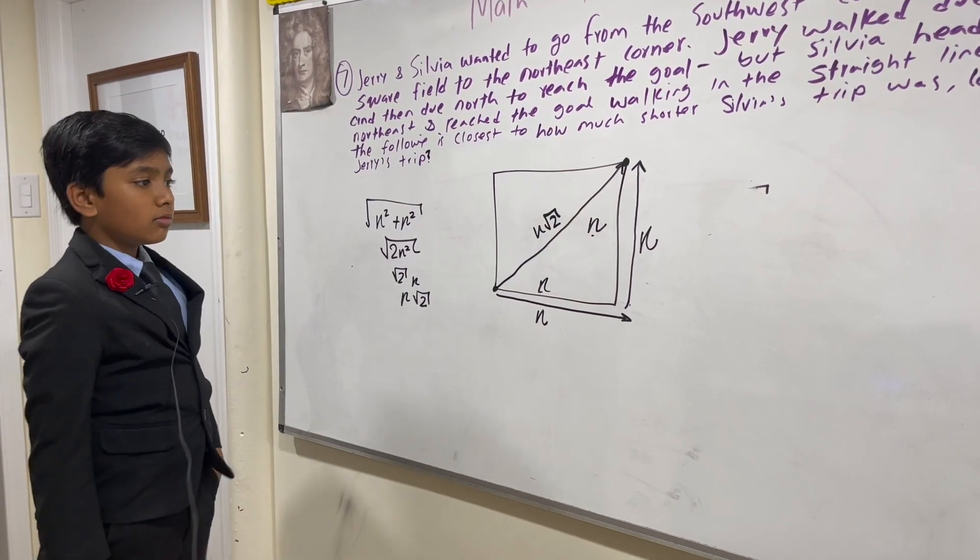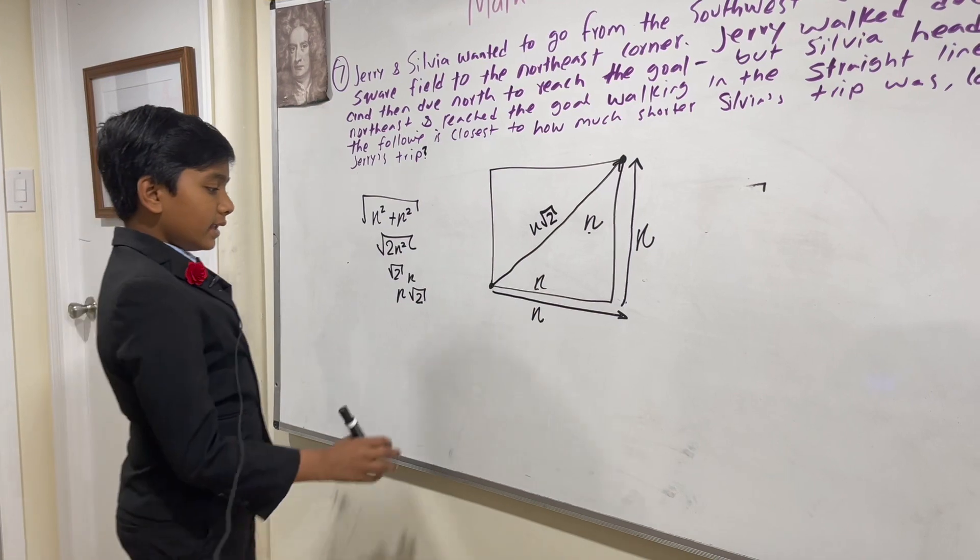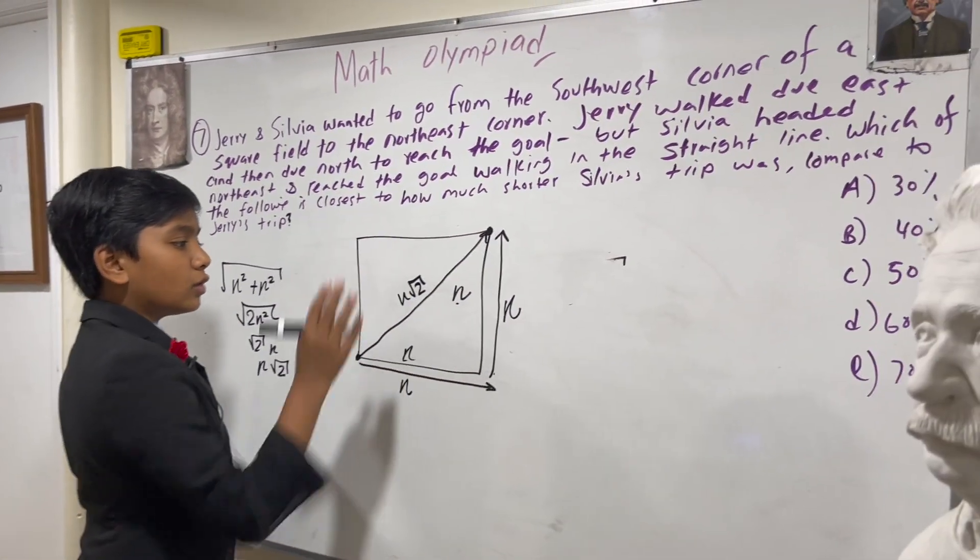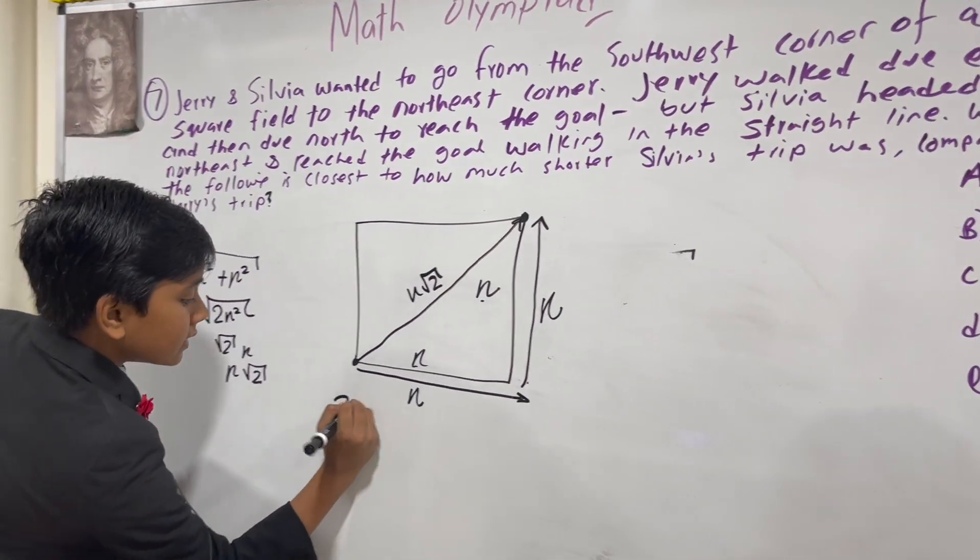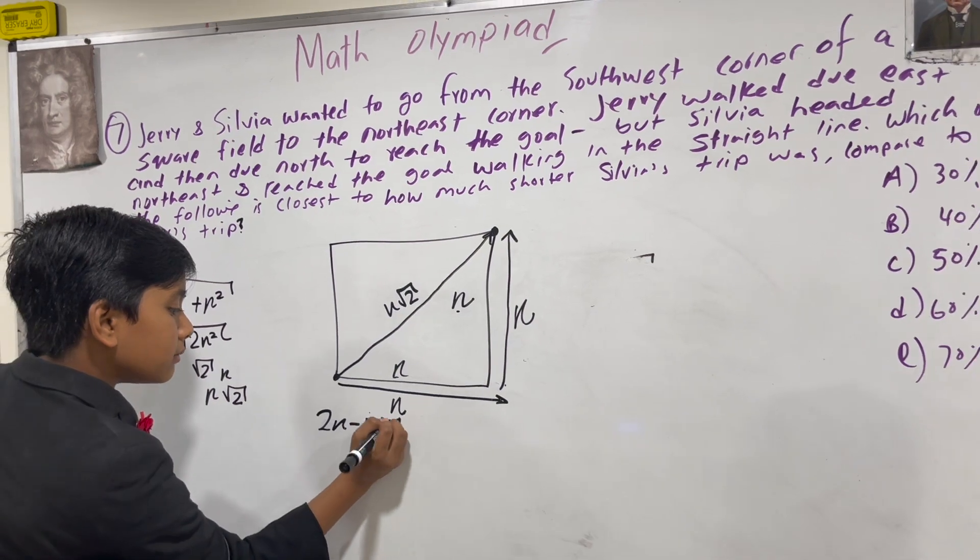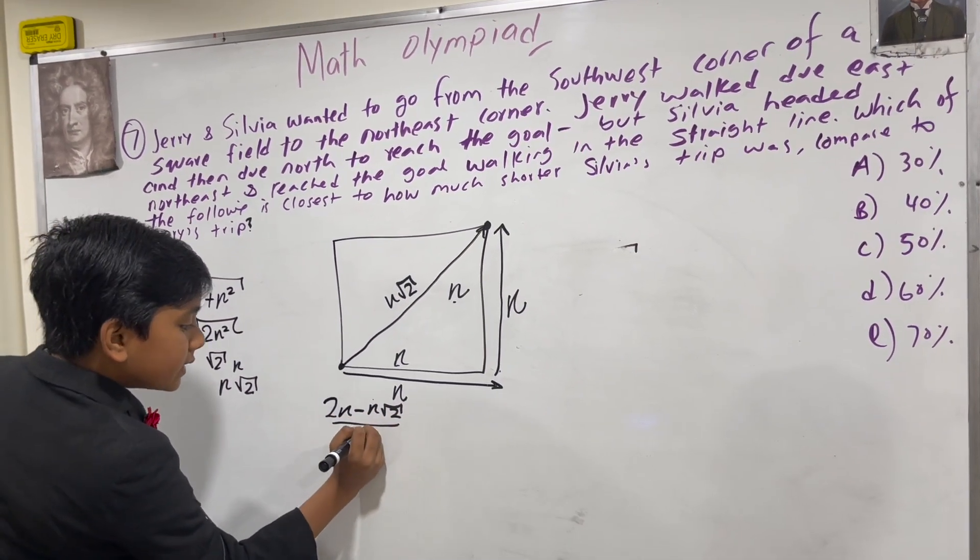Now, finding how much shorter this trip is compared to this one is actually relatively easy. We take Jerry's trip, subtract Sylvia's trip, divide by Jerry's trip.